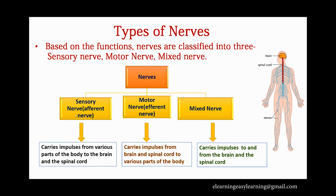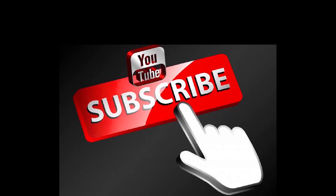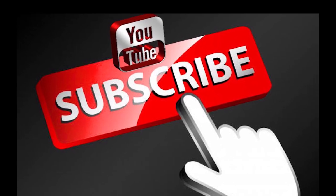Sensory nerves are otherwise known as afferent nerves — they carry impulses from various receptor organs to the central nervous system. Motor nerves are otherwise known as efferent nerves — they carry impulses from the brain and spinal cord to the various parts of the body. Mixed nerves contain both sensory and motor nerves, so they can carry impulses in both directions — from the brain and spinal cord to body parts, and from body organs back to the brain and spinal cord. That is all about this video on neurons and nerves. Thanks for watching — please give your suggestions in the comment box and subscribe the channel for latest tutorials.